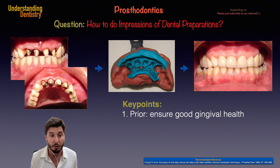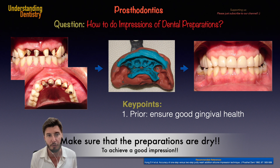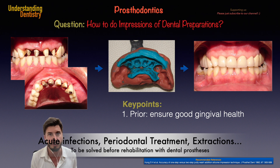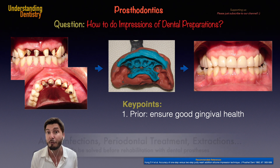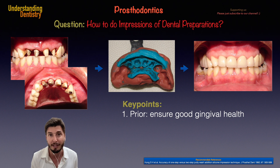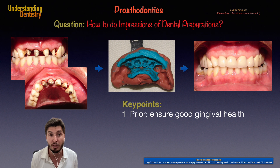The first key point is that prior to the conventional impression, we need to ensure good gingival health. It's much easier to control humidity and perform a very good conventional impression. So if you have, for example, a lot of periodontal calculus, you are going to proceed with periodontal treatment before the rehabilitation — before the conventional impression of your dental preparations. You may want to do a study impression to plan the case, but for the final impression of a preparation, you need the best conditions possible.